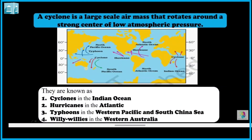A cyclone is a large-scale air mass that rotates around a strong center of low atmospheric pressure. Cyclones are known by different names in different regions: cyclones in the Indian Ocean, hurricanes in the Atlantic, typhoons in the Western Pacific and South China Sea, and Willi-Willis in Western Australia.